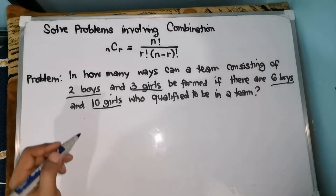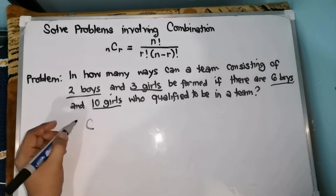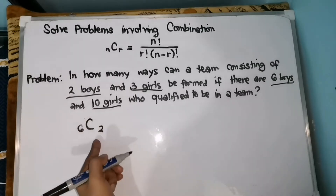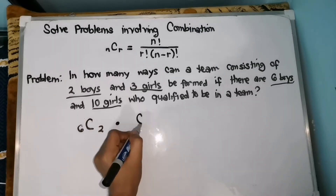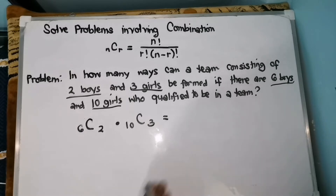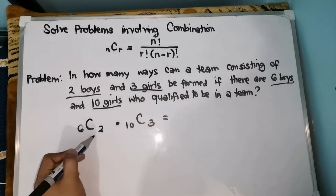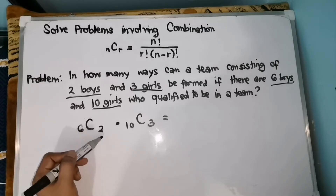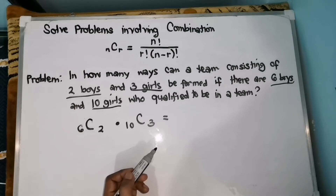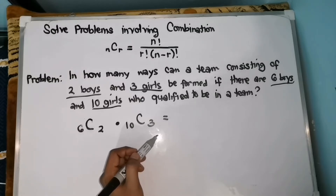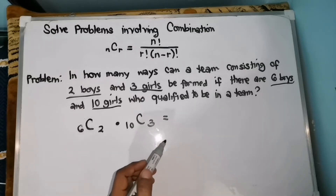We have two combinations: combination of 6 boys taken 2 at a time, times combination of 10 girls taken 3 at a time. This tells us in how many ways we can form a team of qualifiers. For the boys: C(6,2) equals 6 factorial over 2 factorial times 4 factorial. We rewrite 6 factorial as 6 times 5 times 4 factorial, all over 2 factorial times 4 factorial. Cancel the 4 factorial — 6 times 5 is 30, divided by 2 factorial which is 2, equals 15.